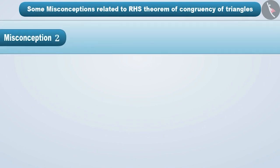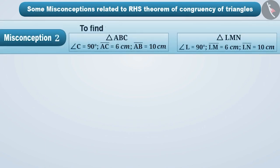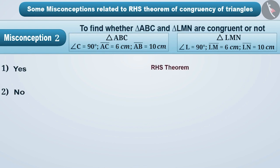Misconception 2. Find out whether triangle ABC and triangle LMN are congruent or not. Some children are aware of the RHS Theorem but are unable to use it properly.